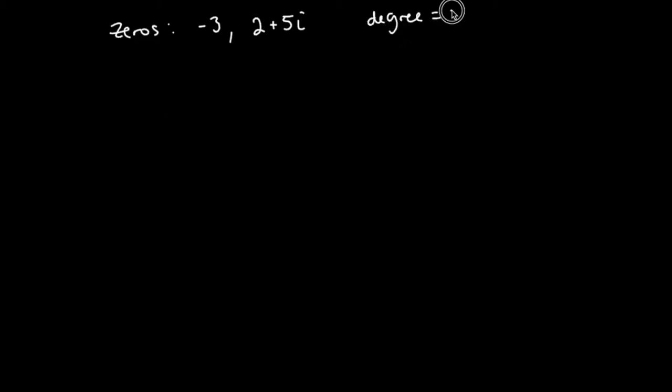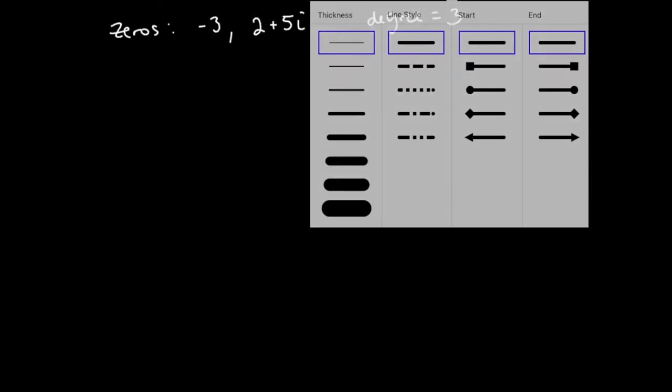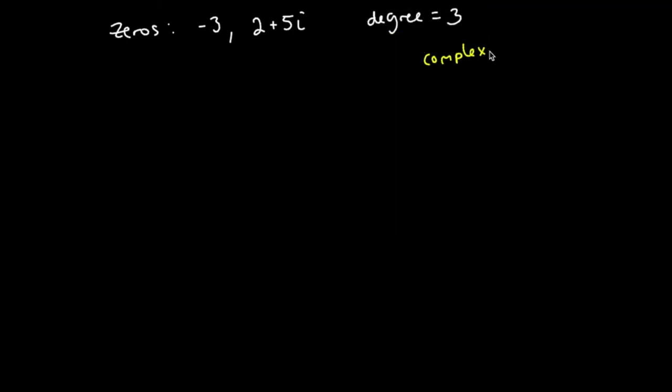Now there are only two zeros here and I should have three zeros for a third degree polynomial, but what you need to know, what you should remember always, is that complex zeros always come in pairs. Complex zeros always come in conjugate pairs.